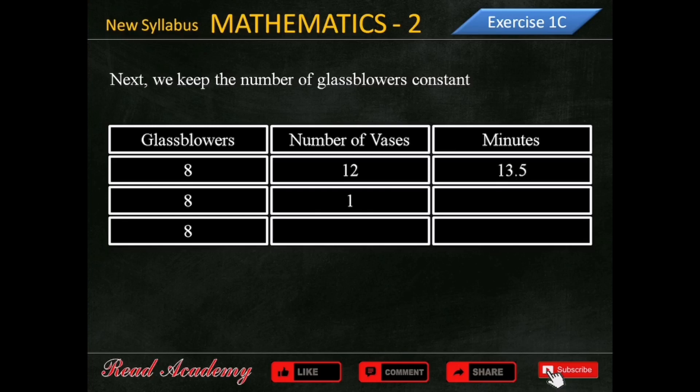One vase will take less time. To find the number of minutes to make one vase, divide 13.5 by 12. The result is 1.125 minutes.